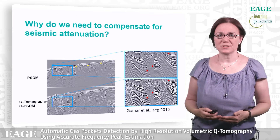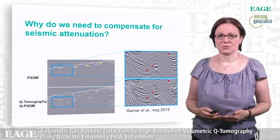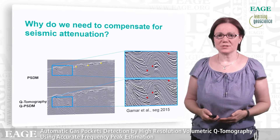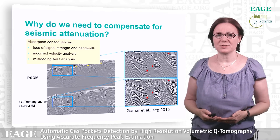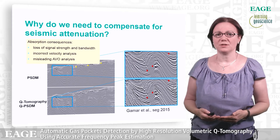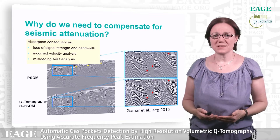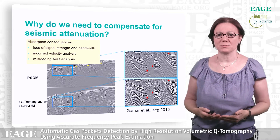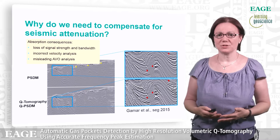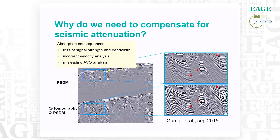Low Q values indicate strong absorption. The absorption results in loss of amplitude signal and reduction in bandwidth, masking the structures beneath strong absorption areas. If not compensated for, the absorption can lead to incorrect velocity models and misleading AVU attributes and reservoir properties.